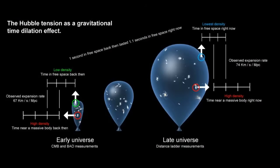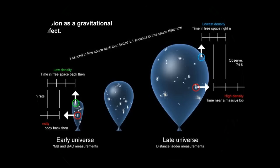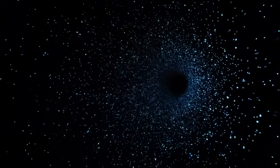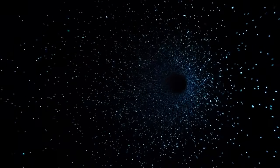Weak gravitational lensing, a technique used by scientists, involves studying subtle distortions in distant galaxy images caused by the gravitational influence of cosmic structures. This method helps map the distribution of dark matter, an invisible substance with gravitational pull, aiding in understanding the universe's lumpiness.